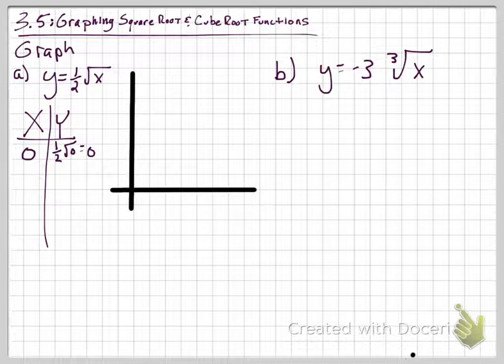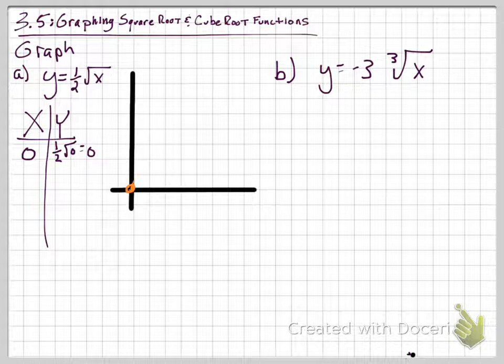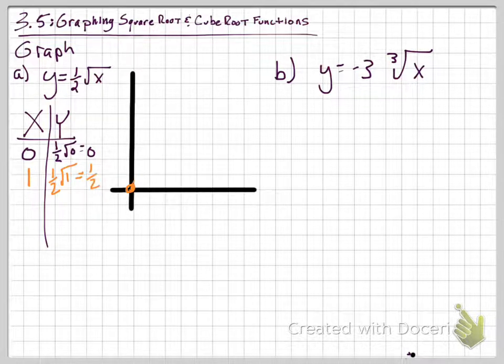Let's use a different color here. If I plot a point right there, we're plotting 0, 0 to start. Another good number to plug in for x would be 1. I want to pick something I can square root or a perfect square number. So if I do one half of the square root of 1, that's one half times 1 because the square root of 1 is 1. That's going to give me an output of a half. So if I plug in 1, I get a half. If this is 1, if we're counting by 1, that's going to be right about there.